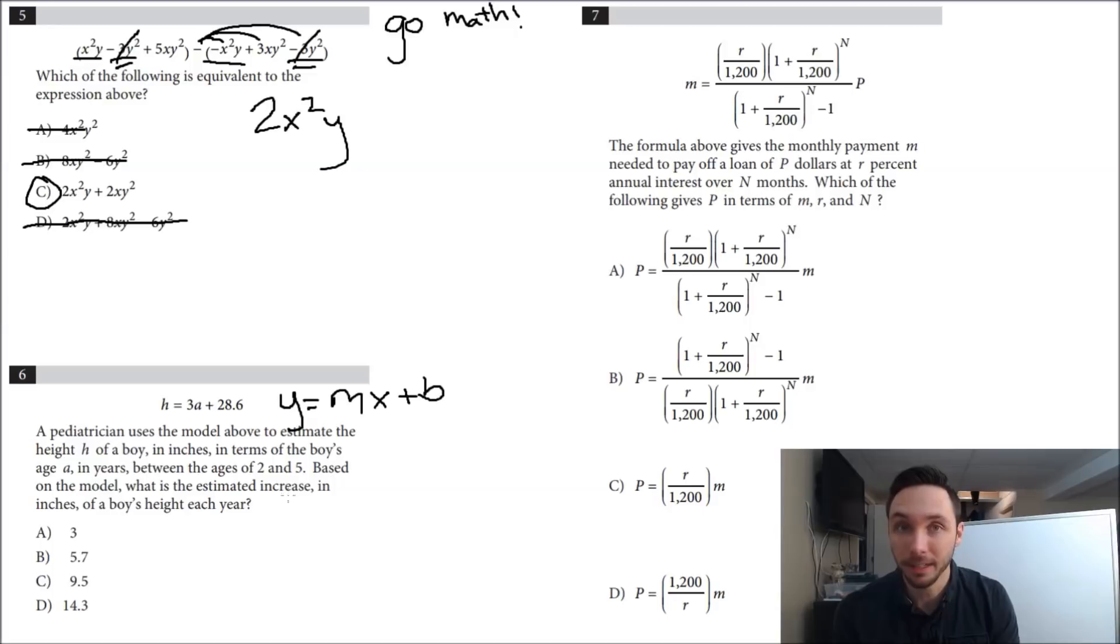My second piece of advice when working through the SAT is to read the last sentence first when there's a lot of reading. This way it's going to tell you essentially what is going on, what is it asking for. At the end of the day, after all this information said and done, what is it actually just straight up asking you for?